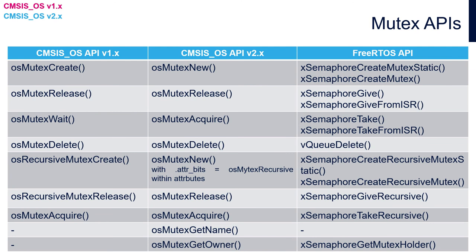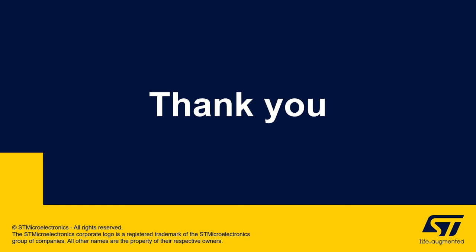Let's have a quick overview of available functions across different APIs. Mutexes are supported by all three APIs: FreeRTOS, CMSIS-OS version 1, and CMSIS-OS version 2. An important change is the naming convention introduced in CMSIS-OS version 2 — instead of 'create' there is 'new', and instead of 'wait' there is 'acquire'. Additionally, two new functions have been introduced in CMSIS-OS version 2 for getting information about the mutex.